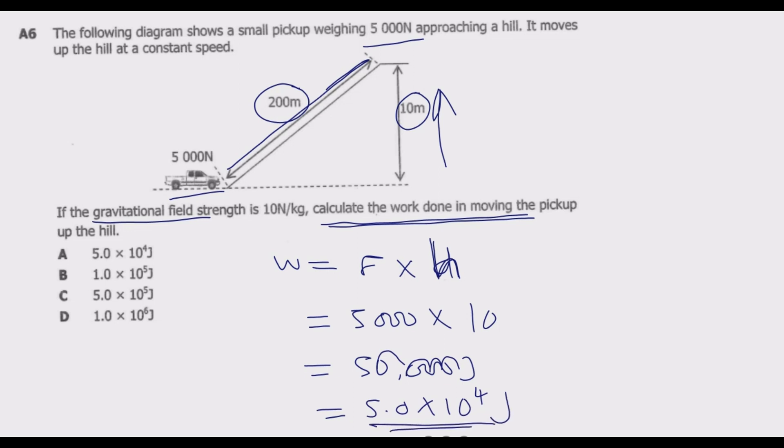Which is in this case if you look at the options is C. So please make sure to understand. The temptation is to multiply this by that which is going to give you 1.0 multiplied by 10 to the power 6 joules. This is incorrect. Notice that the temptation is to go with D, but it's against gravity. So it's C. So C is the correct answer. Please take note of this. If it's against gravitational force, it's the height.